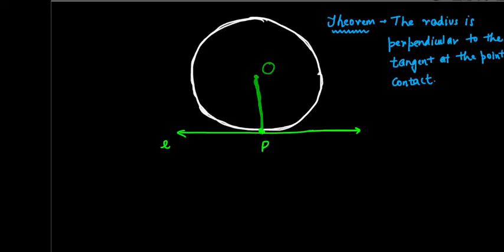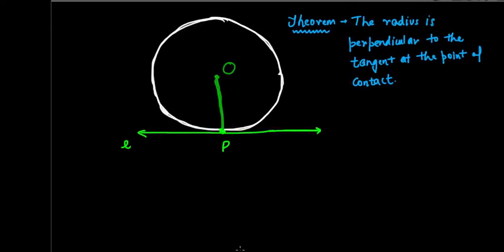Hello everyone and welcome back to yet another video from my channel Interactive Education, running for the best education possible from the student to the student. Today we will be continuing the chapter on Circles, and we'll be going over the first theorem and its proof: the radius is perpendicular to the tangent at the point of contact.